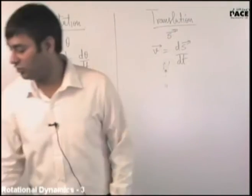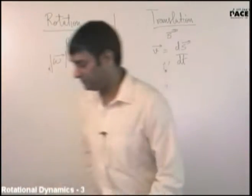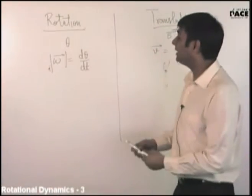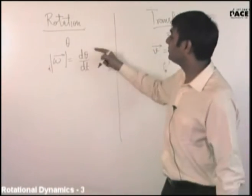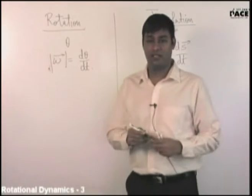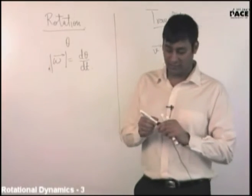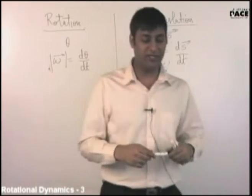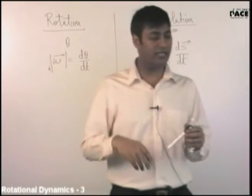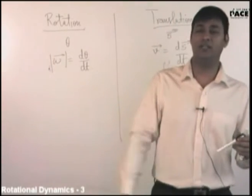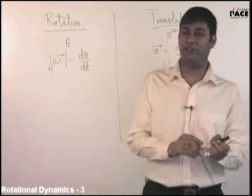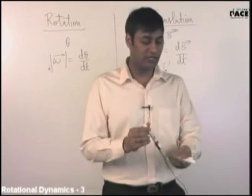Explain it to yourself. Infinitesimally small angles are vectors and can be treated as vectors — vector algebra is fully followed there.